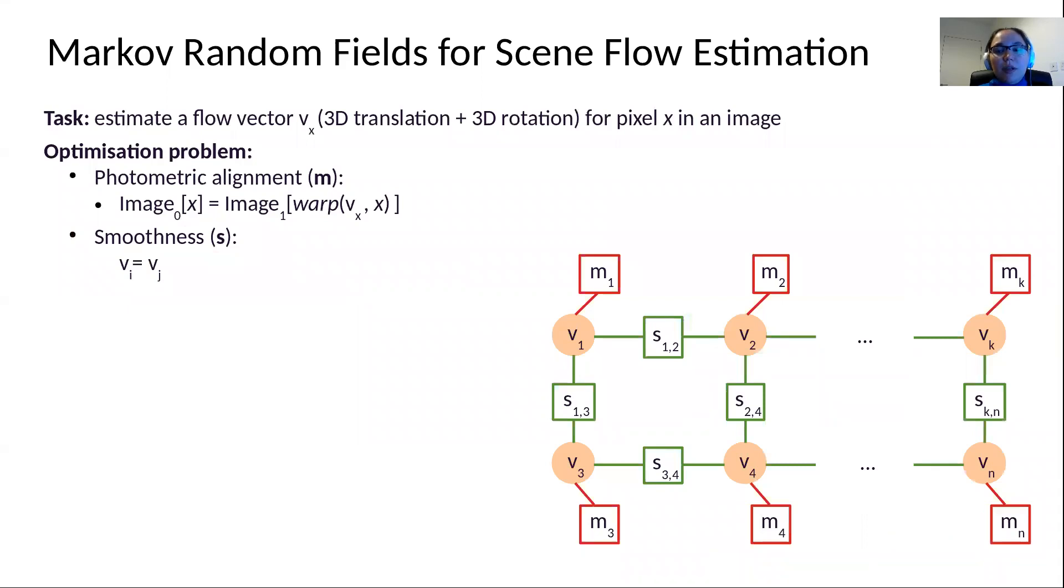Markov random field formulations have been applied in the past for scene flow estimation. Our task is to estimate the flow vector Vx, which consists of 3D translation and 3D rotation for each pixel x in an image. The optimization problem can be formulated as a factor graph, with the structure shown in the bottom right corner. In orange, there are per-pixel flow variables V, which are optimized for using two types of factors.